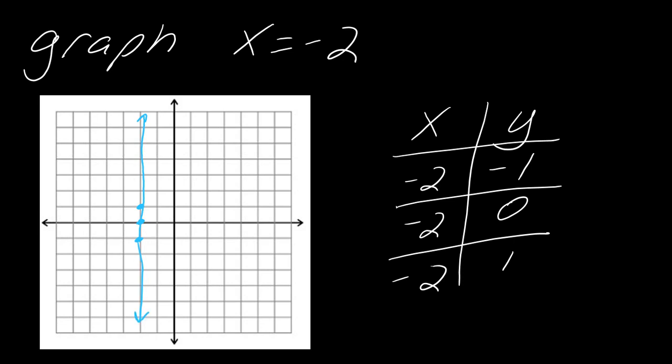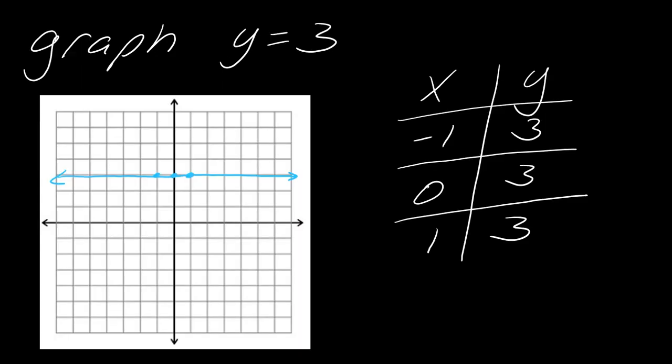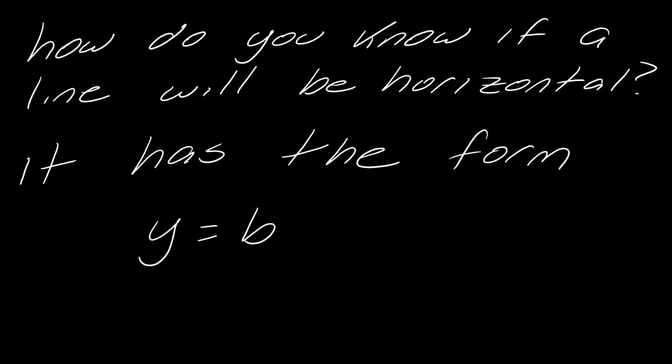Okay, so now we kind of know the gist of this. So how do you know if a line will be horizontal? So the thing about horizontal lines, if you look at this, it's going to have this y equals. So horizontal lines have the form y equals a number. So I put y equals b. b can stand for whatever number that you want.